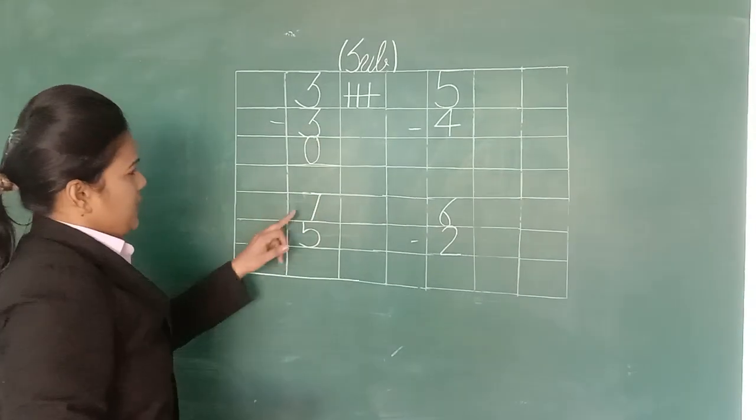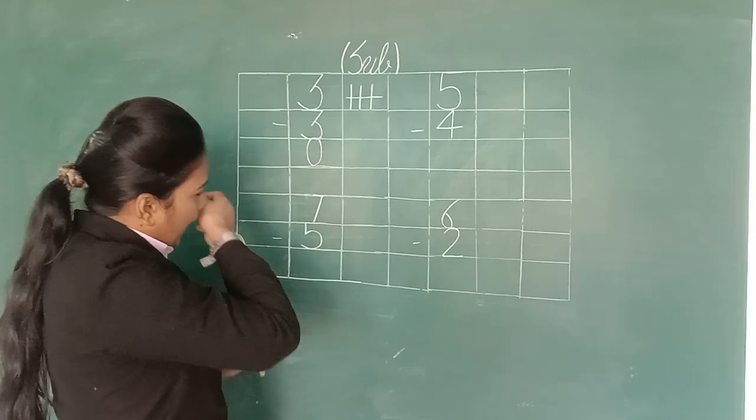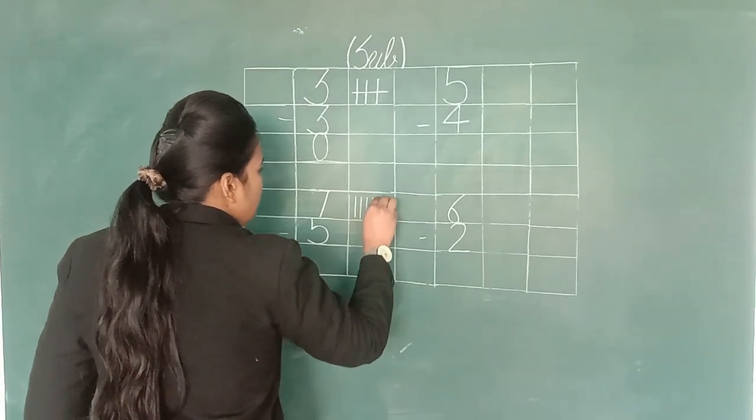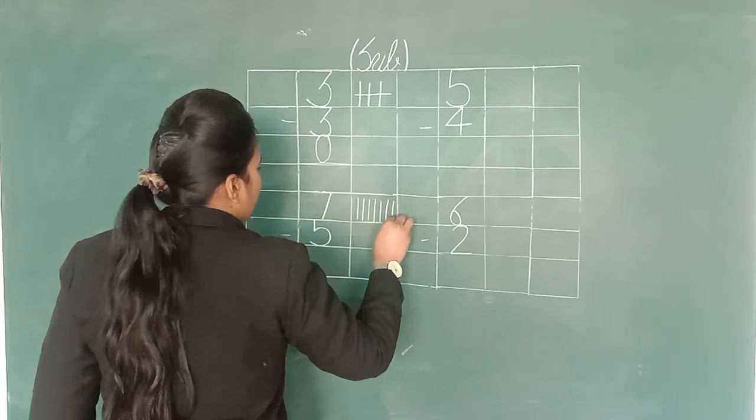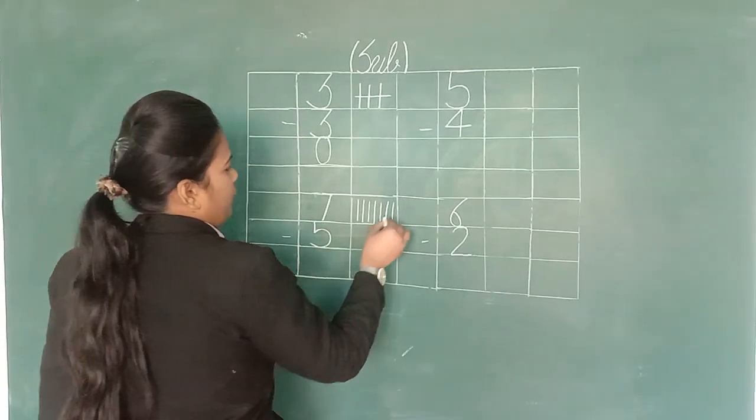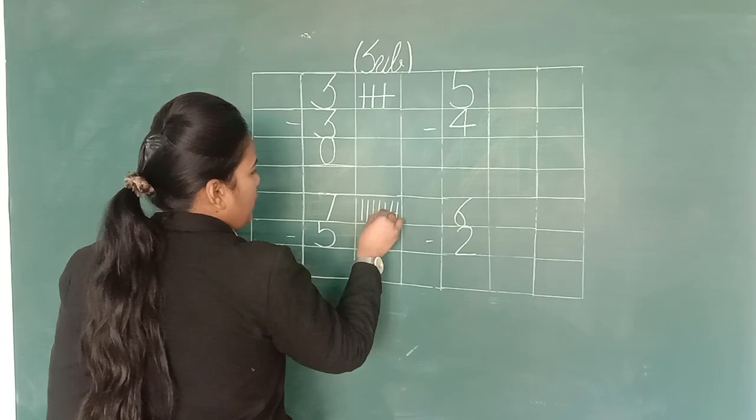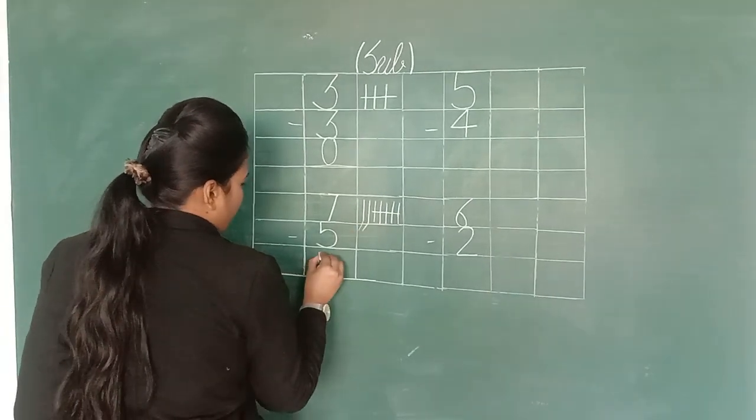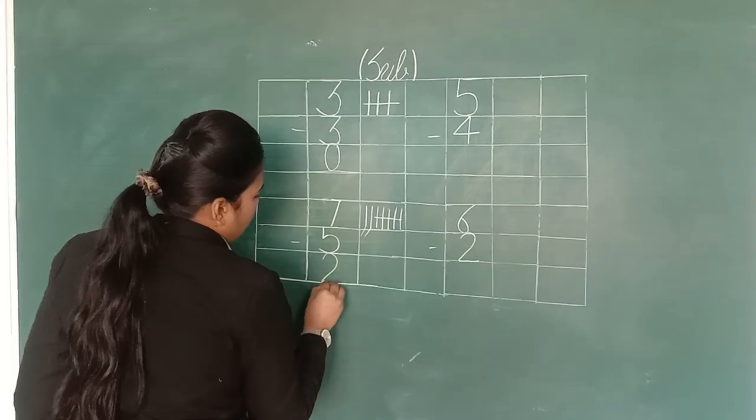Next sum, 7 minus 5. First line figure is 7: 1, 2, 3, 4, 5, 6, 7. Now we will cut 5: 1, 2, 3, 4, 5. Left over is 1, 2. Write down 2.